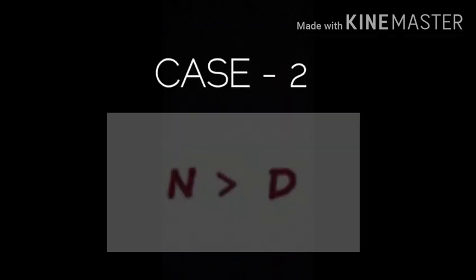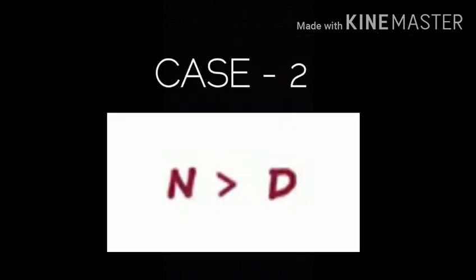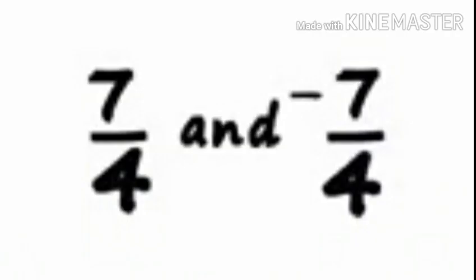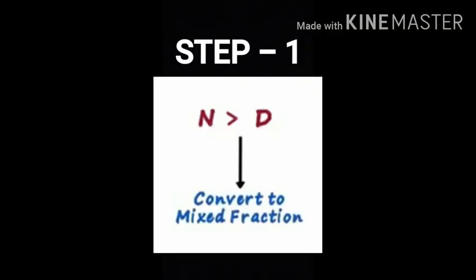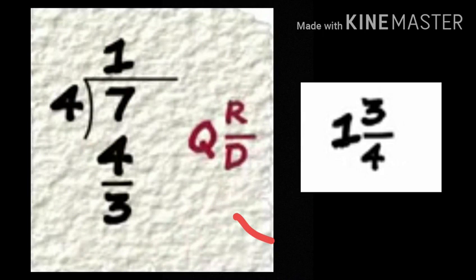Moving on to case 2, we will plot rational numbers where numerators are greater than denominators. We will try to plot 7 by 4 and minus 7 by 4. The first step here is to convert the given improper fraction into mixed fraction. So we end up with 1 and 3 by 4. 1 is called the whole number part and 3 by 4 is the fractional part.